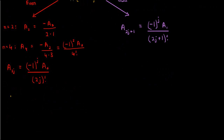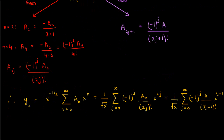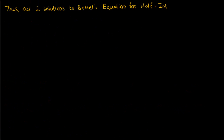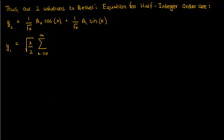Using these two coefficient formulas we can write the final expression for the second solution to Bessel's equation of half integer order. These sums should look familiar — one is the power series for cosine and the other is the power series for sine. Meanwhile the first solution y1 is as derived before, with the square root of 2 factored out from the summation.